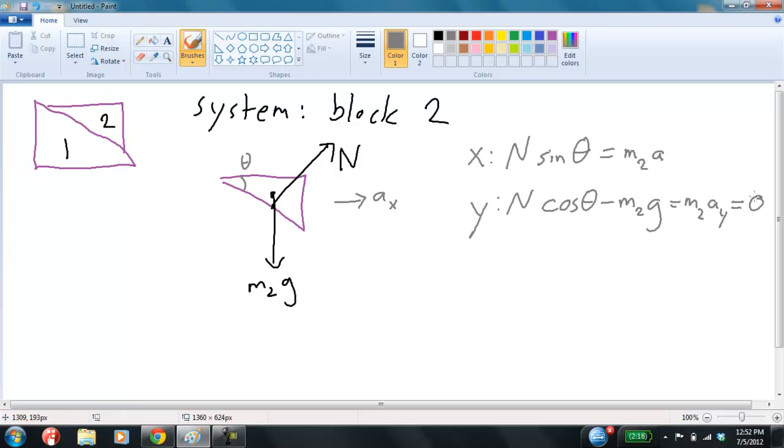And so right away, that expression there says N equals m2g divided by cosine theta.